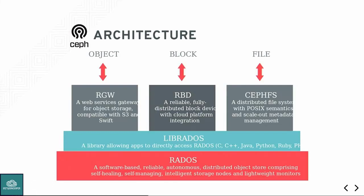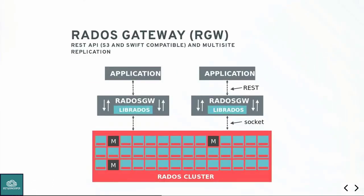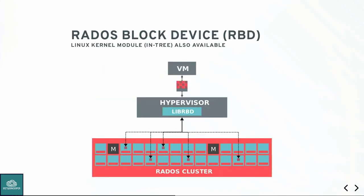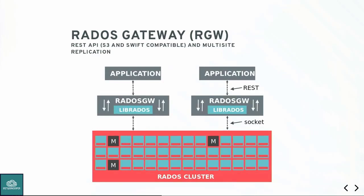One of the most common deployments is the RADOS gateway. You've got your Ceph cluster, your RADOS cluster, and you run an edge server that has a RADOS client running the user space RADOS gateway application. A lot of people run something like HAProxy in the middle to form a highly available service. Then you can access your Ceph cluster using the REST semantics that S3 and Swift provide.